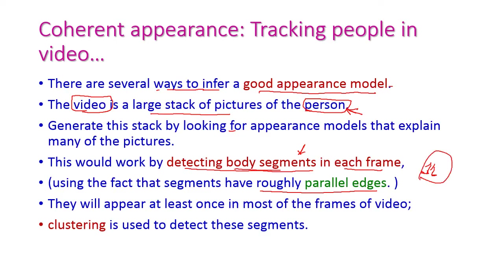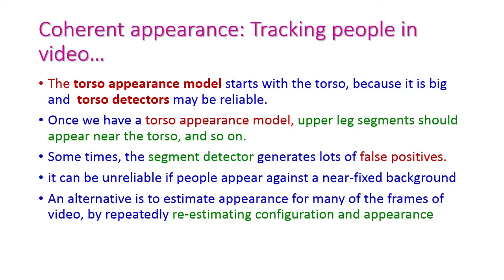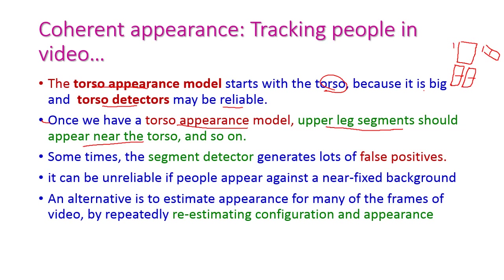For this we can use clustering technology. The torso appearance model starts with the torso because it is big and the torso detector is reliable. Once we have the torso appearance model, the upper leg segments should appear near the torso, and so on. So this is the torso part, these are the legs — upper leg and lower leg, left leg and right leg — and the hand, upper arm, and lower arm, plus the head with eyes and mouth.